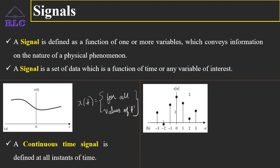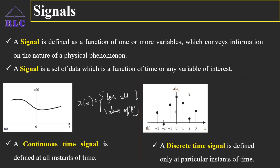Whereas a discrete time signal is defined only at particular instances of time. That is, the value of signal x(n) exists only at particular instances of time. The time indications in the figure are n equal to minus 3, minus 2, minus 1, 0, 1, 2 and 3. For example, at n equal to 3, the value of signal x(n) is 1. So only at particular instances of time, a discrete time signal will be defined.